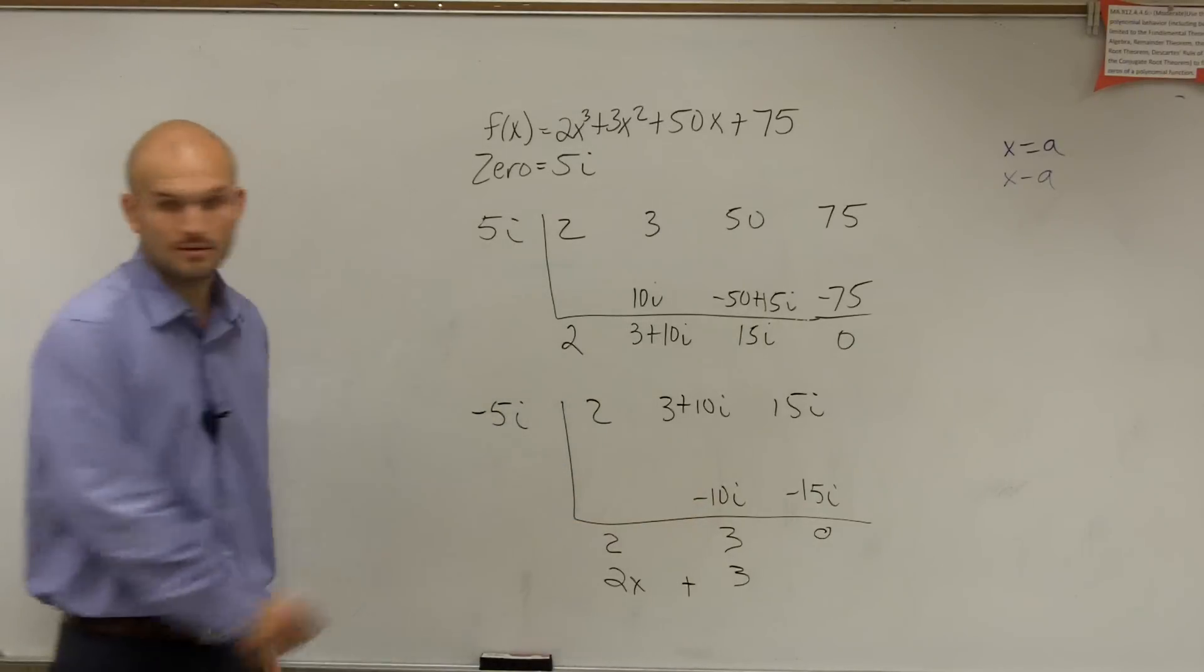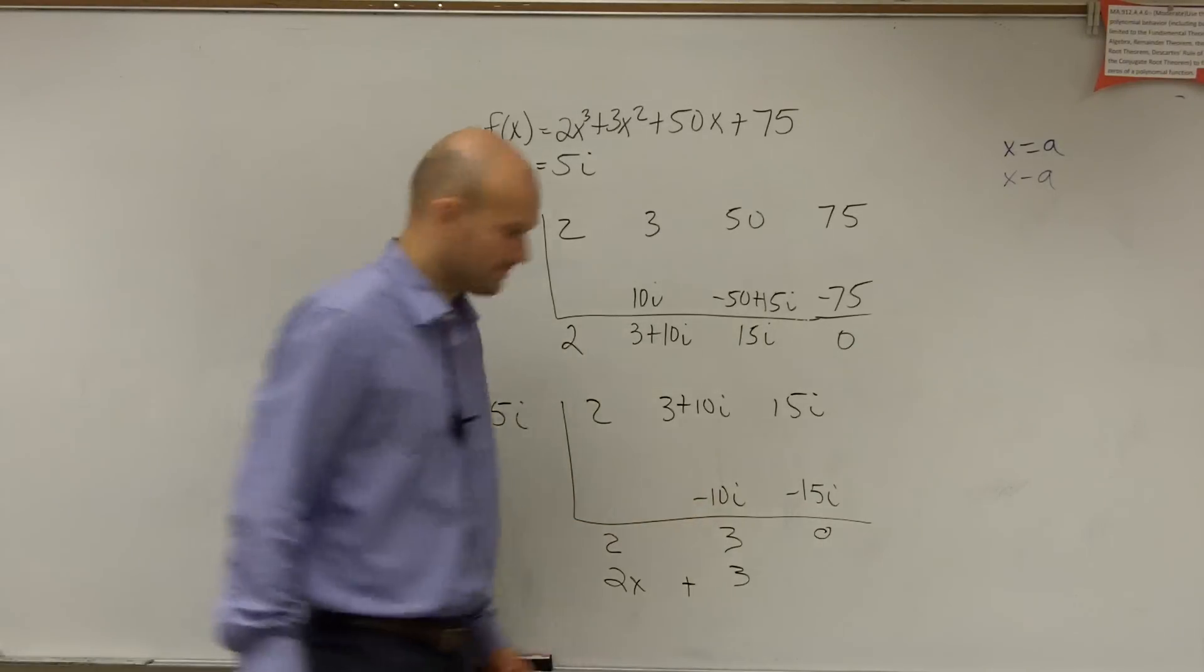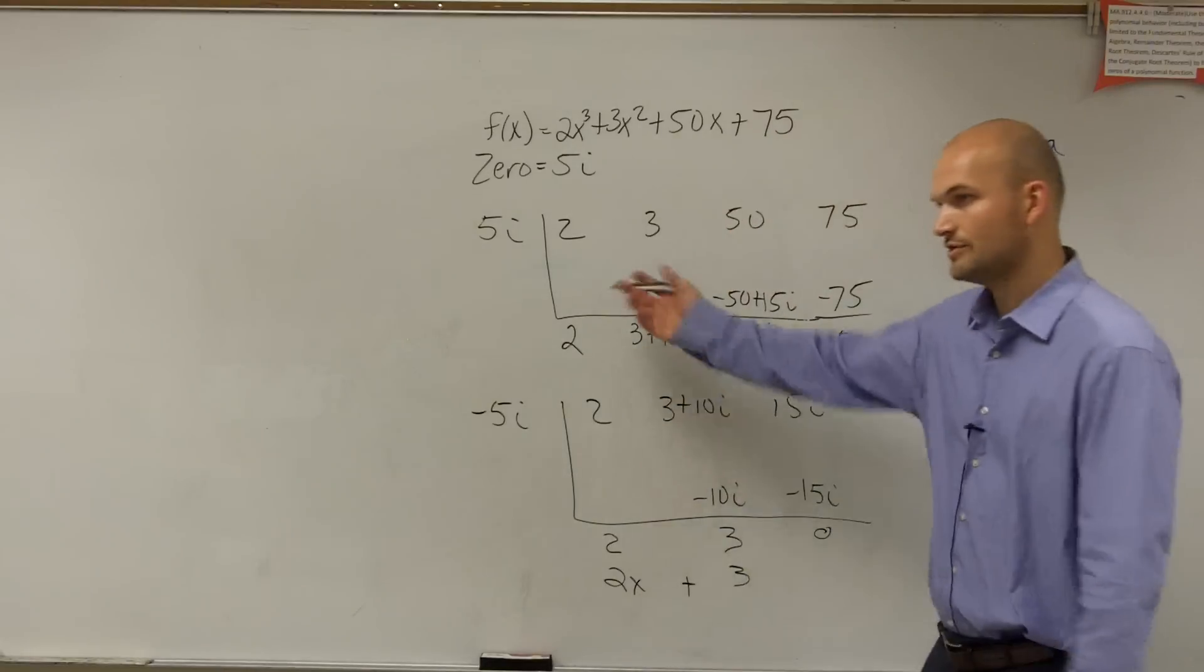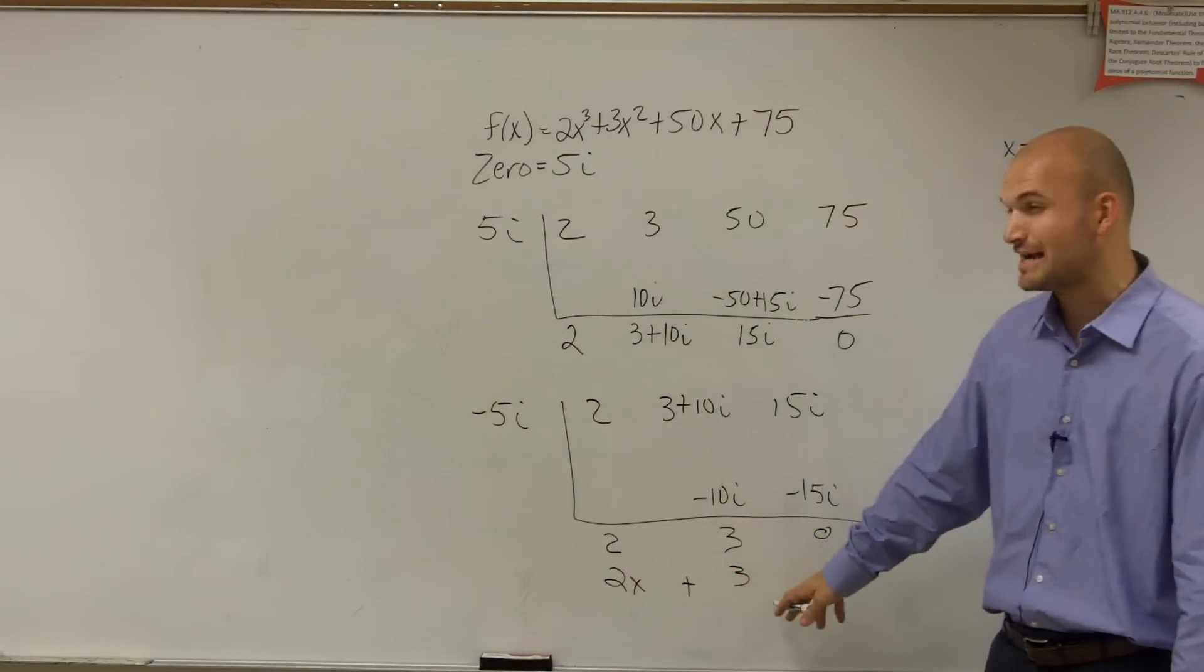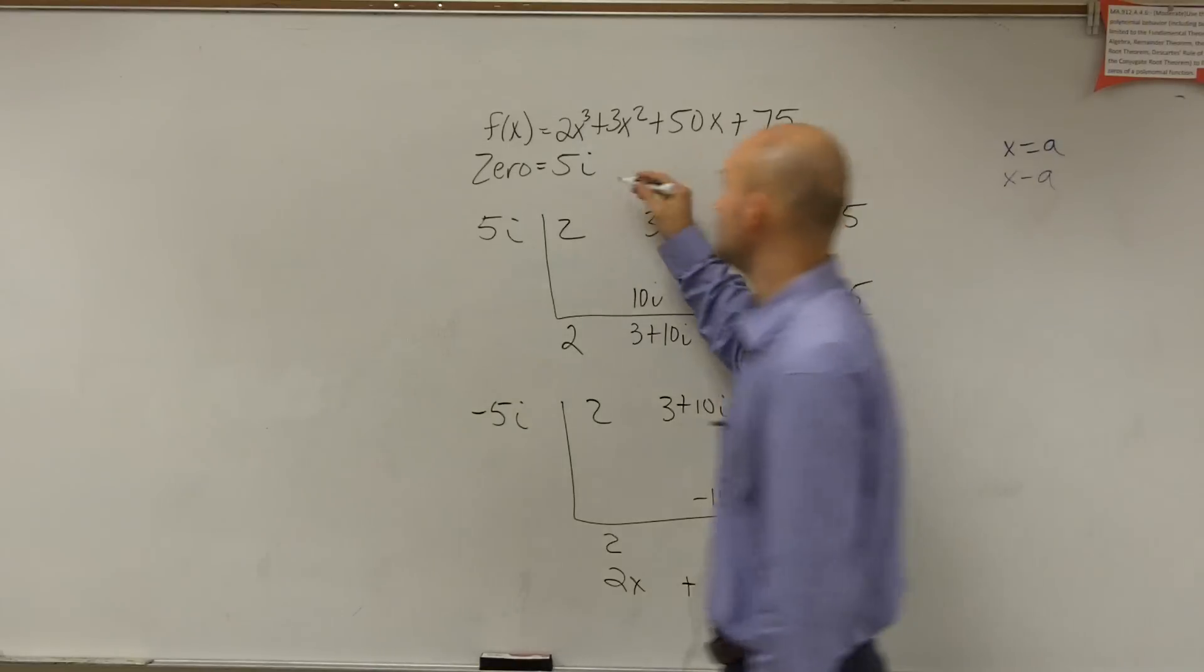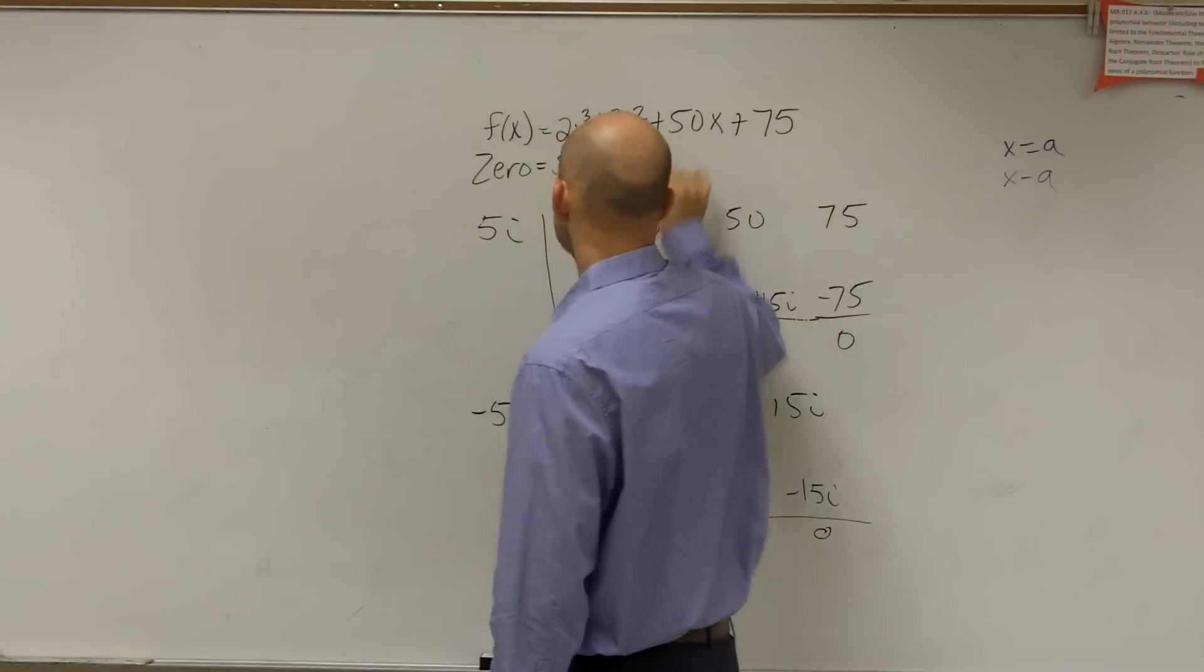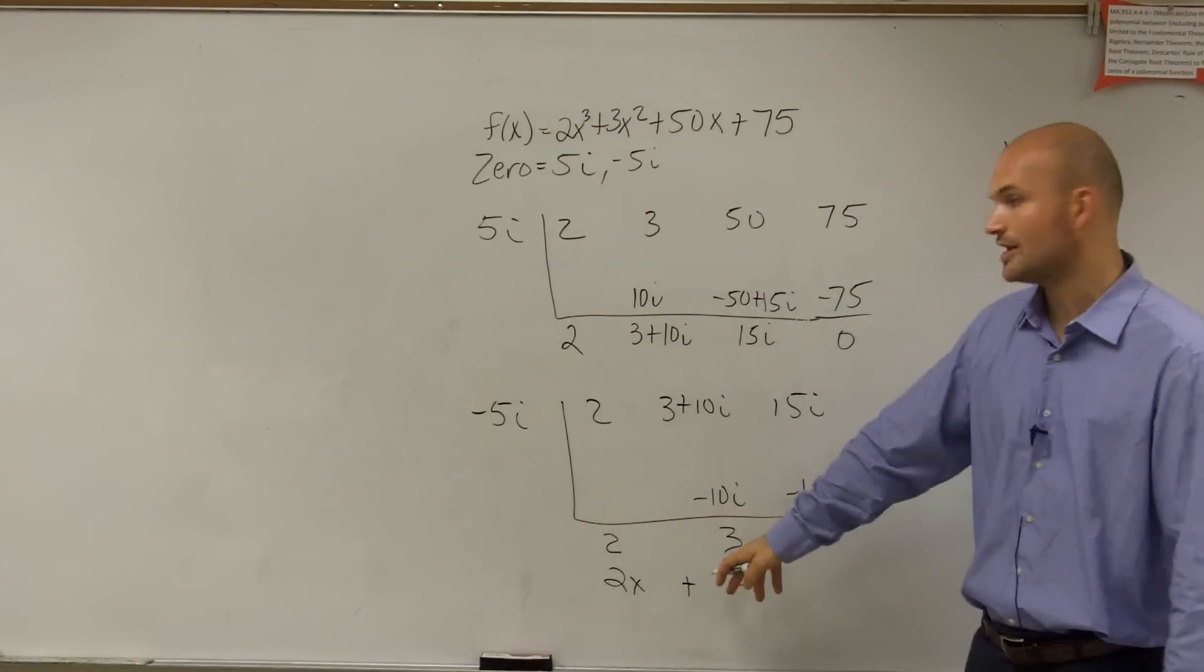So therefore, my zeros... I can figure out what to do after this. After you do it twice? Yeah. Okay. Okay, so now this is your last factor. So we know my zeros are 5i, negative 5i. That's the given.